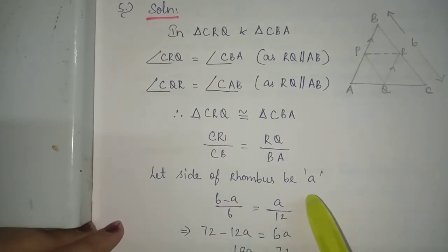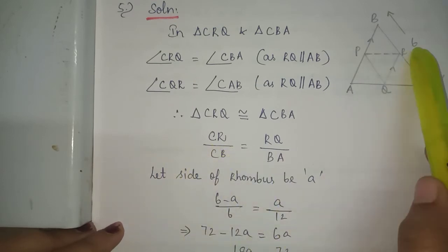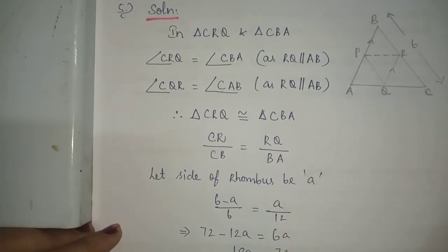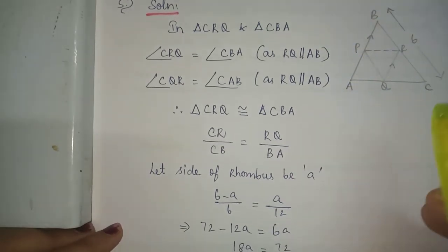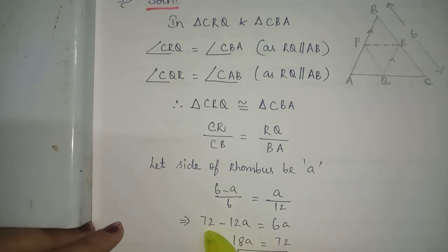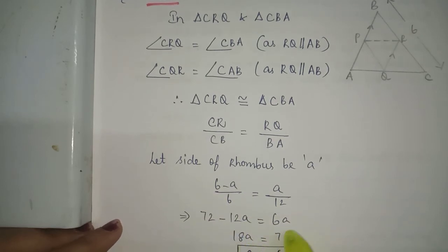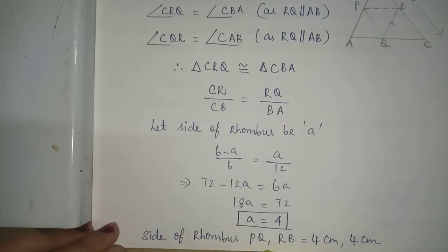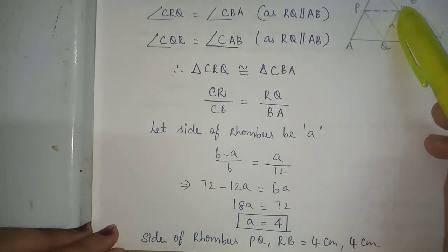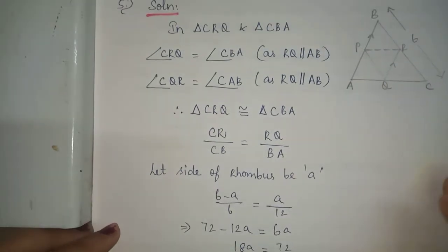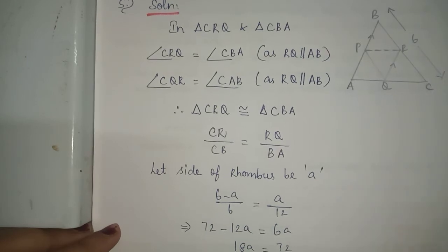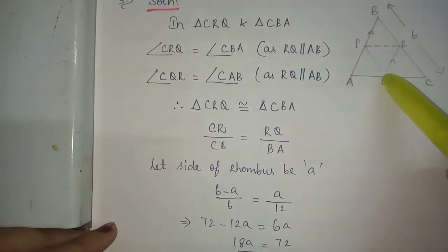Then CR is (6 minus a), CB is 6, RQ is a and BA is 12. Substituting: (6 minus a) by 6 equals a by 12. Cross multiplying: 72 minus 12a equals 6a. So 18a equals 72, giving a equals 4. Therefore the sides PQ and RB of the rhombus are each 4 cm.